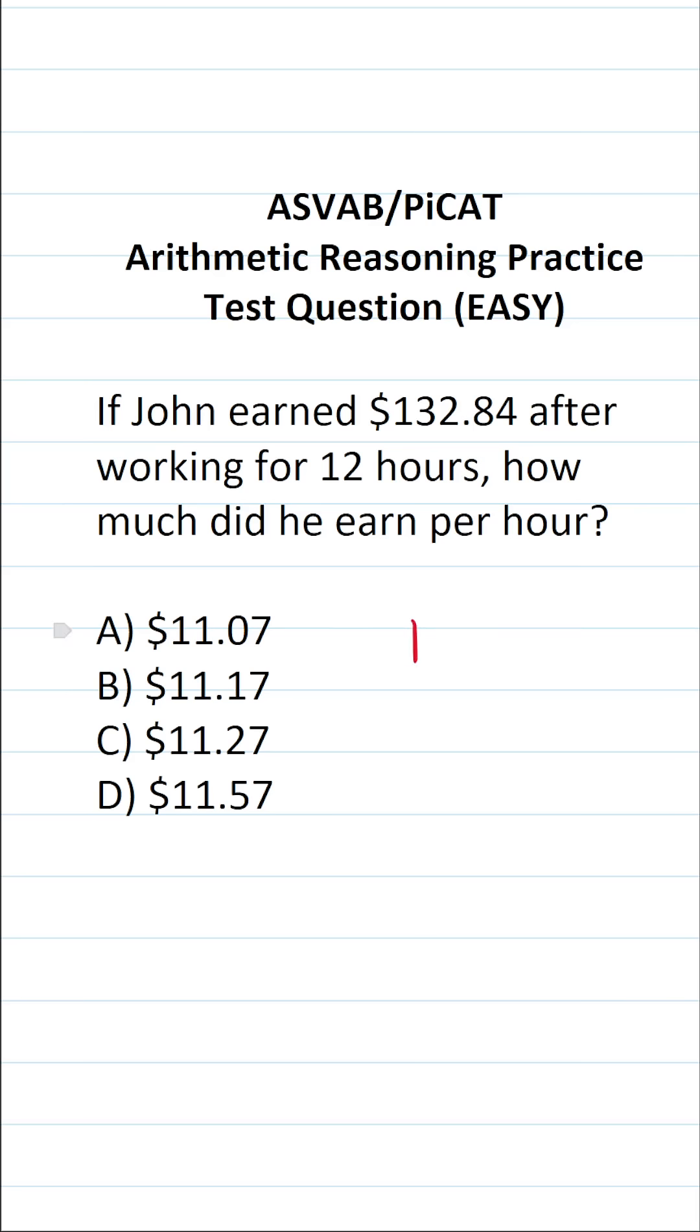So we're simply going to do $132.84 divided by 12, and this will get us our answer. That said, you have to be confident in your ability to work with fractions as well as decimals for both the ASVAB and PiCAT. And again, you're not given a reference sheet or a calculator, so you do have to be able to perform these calculations by hand.